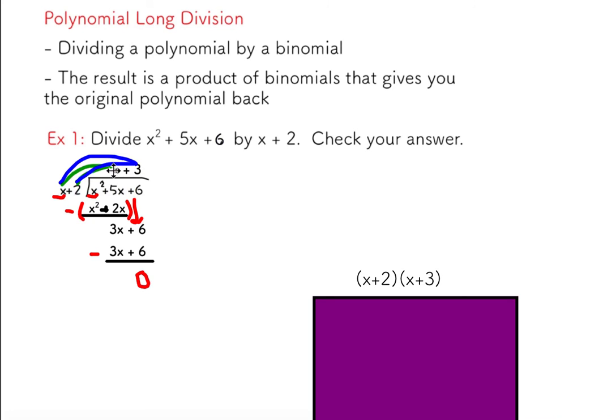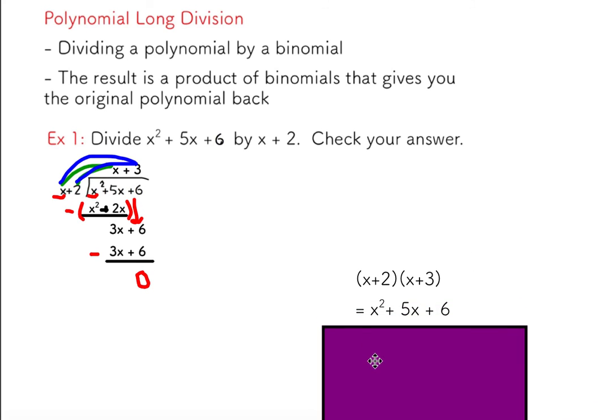I've got x plus 3 and I'm claiming x plus 3 times x plus 2 will give me this trinomial back. If I just use the FOIL process here, you can see I do in fact get my original trinomial back.